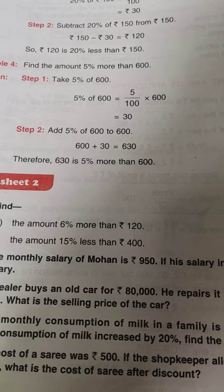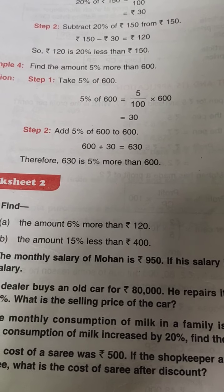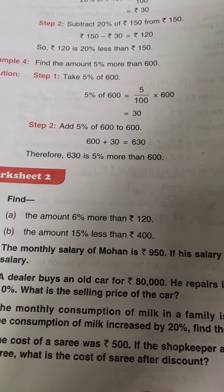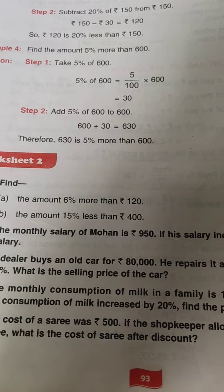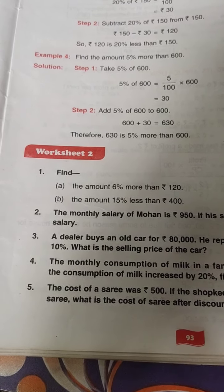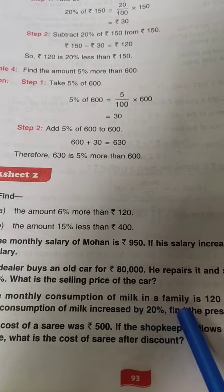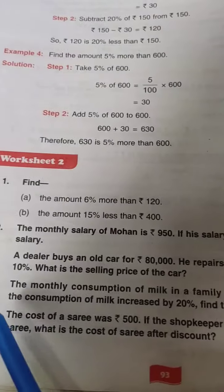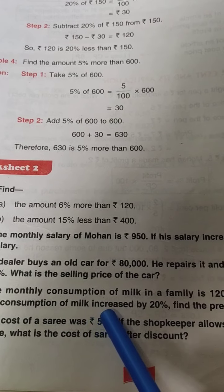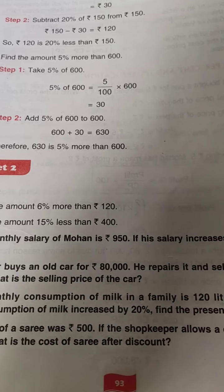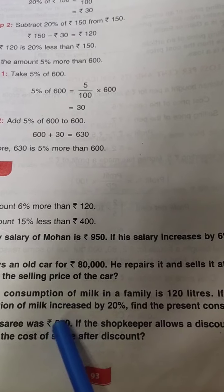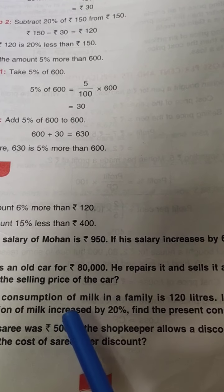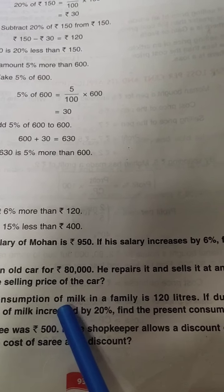You can do it. Whenever you listen less, you subtract. Whenever you see more, you add. So let's do one question of it. Suppose I am taking 4th question. The monthly consumption of milk in a family is 120 liters. If due to festival, the consumption of milk increased by 20%—so increased. So what you have to do? Very good. You have to add.